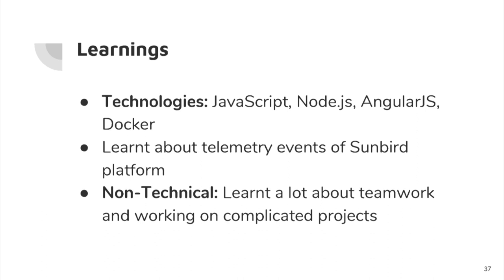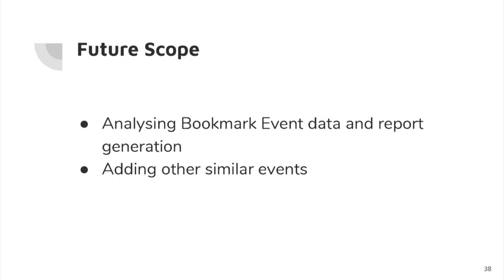For the bookmark event flow, we first read the code flow to understand how to add a new event. We added a bookmark button on the Sunbird portal, then made changes in the telemetry service code and the telemetry library code. The telemetry sync manager syncs the generated data with the platform, which is now being directed to the IITBX Swift storage. We have a sample screenshot of the Sunbird portal with two bookmarks buttons — one clicked and one unclicked — along with the logs generated for bookmark added and bookmark removed events, showing the bookmark ID, component type, component usage ID, and course ID. Future scope includes analyzing the data and generating reports, and similarly any other event can be added following this approach.